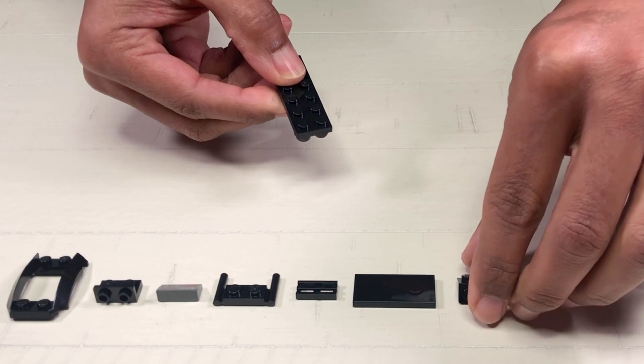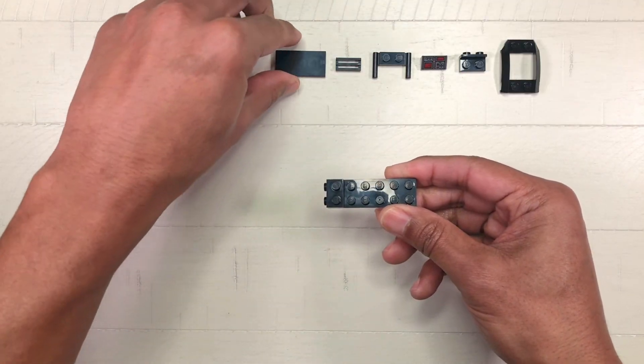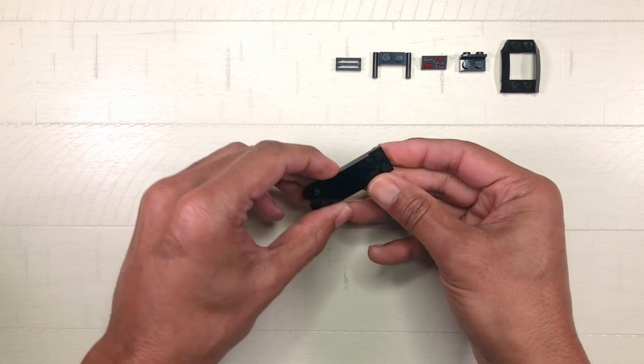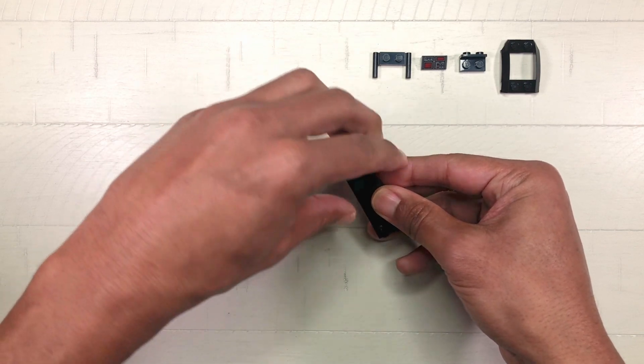Flip it back over and attach the one by two bracket to one end of the two by six plate. Place the two by four tile next to the one by two bracket, then place the one by two grill tile next to the two by four tile.